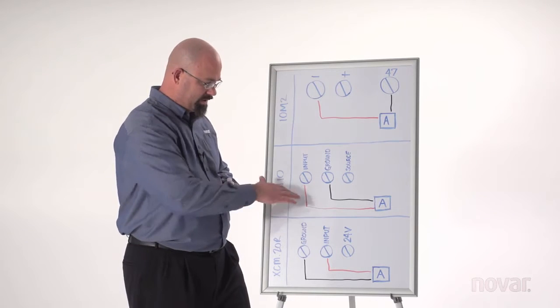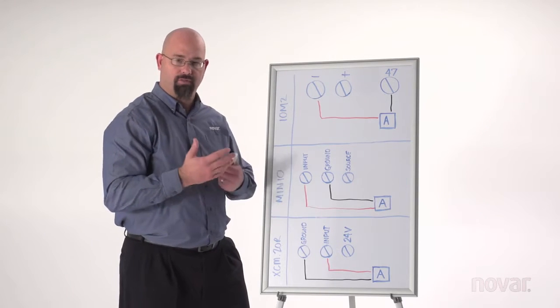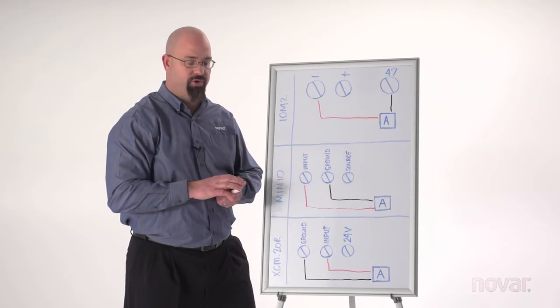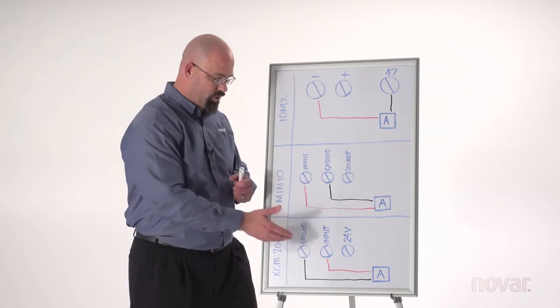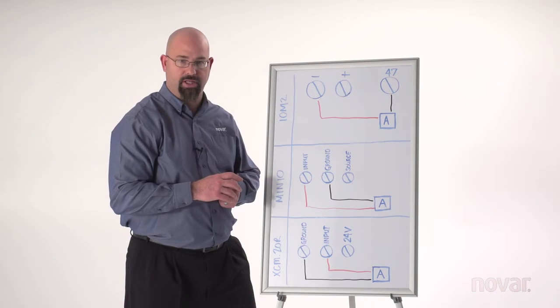Now with the XEM-20R it's compatible the same with the MIN-IO: 4 to 20, 1 to 5 or 0 to 10. It's just here that's all software selectable so there's no jumpers for you to move for each independent input.